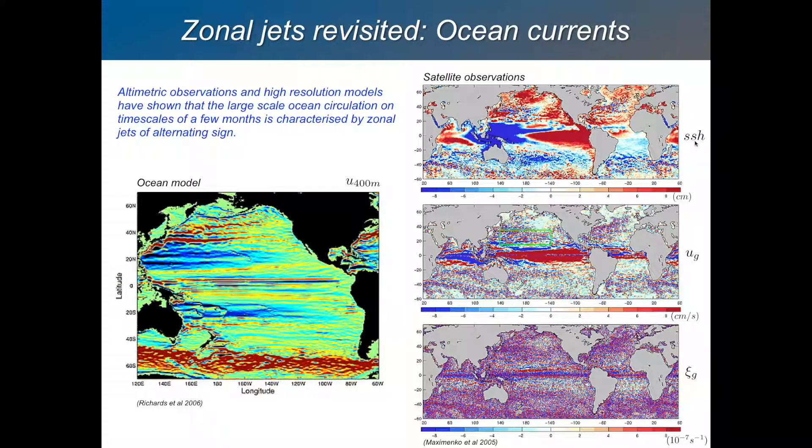Here is the sea surface height. From that you can deduce the geostrophic surface flow and you can sort of see these zonal jets in that, and there's the vorticity, the geostrophic vorticity.